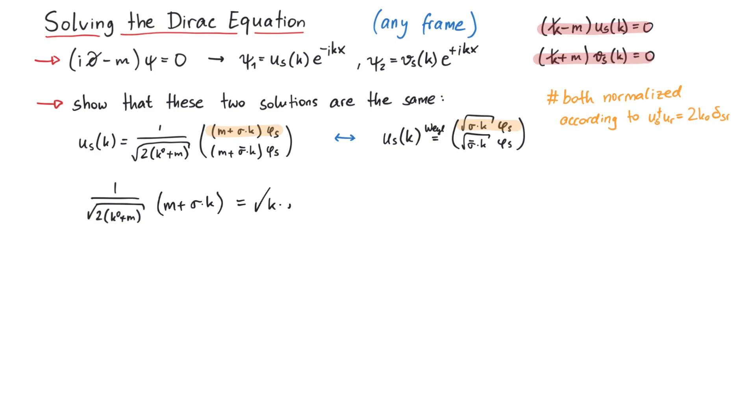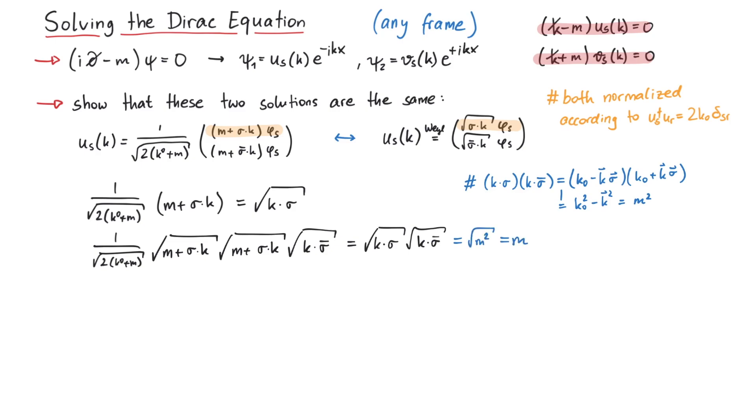First, we multiply both sides with the square root of k times sigma bar. And we write this term twice, but under a square root. Since k times sigma multiplied with k times sigma bar equals m squared, we can simplify both sides.